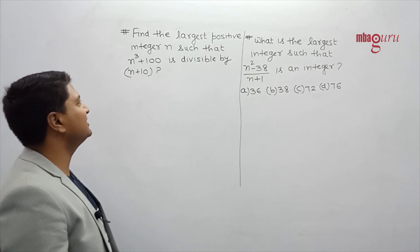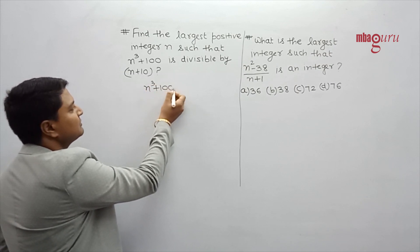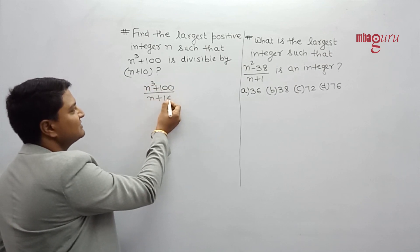So what should be the biggest positive integer which n squared plus 100 is always divisible by? Who is divisible? n plus 10. So this is the question.